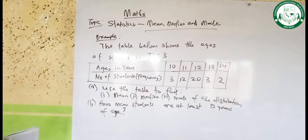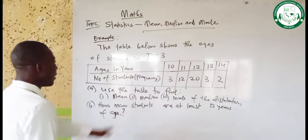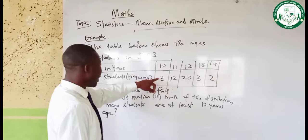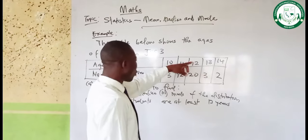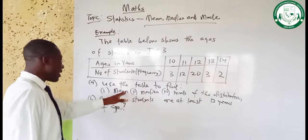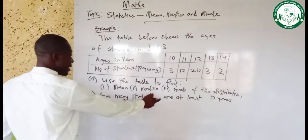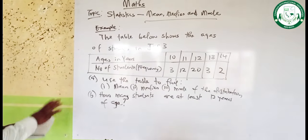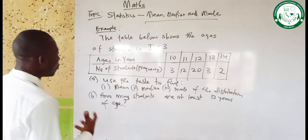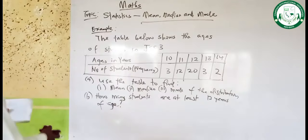Now, this is a question I would really want you to solve yourself. We are shown the ages of students. Ages in years are between 10 and 14. Those who are 10 years were 3, those who are 11 were 12, those who are 12 years were 20, 13 years were 13, and 14 years were 2. We are going to use grouped data in the form of a table to solve this problem.